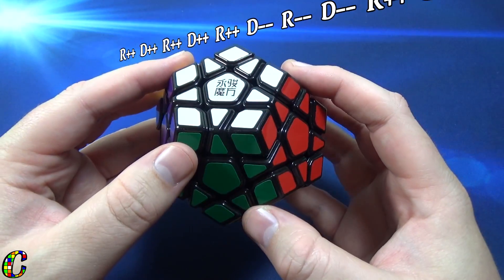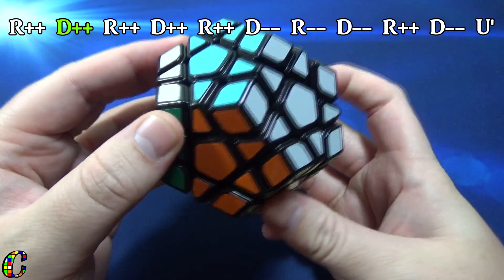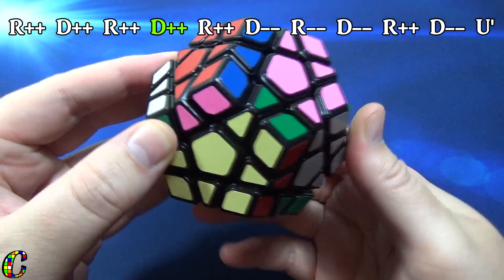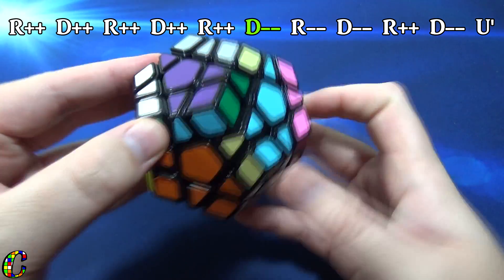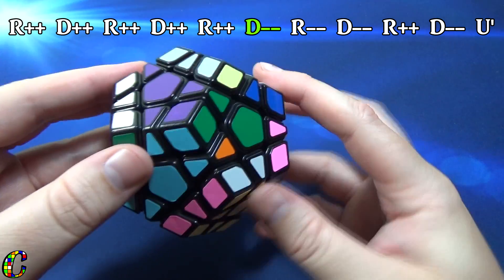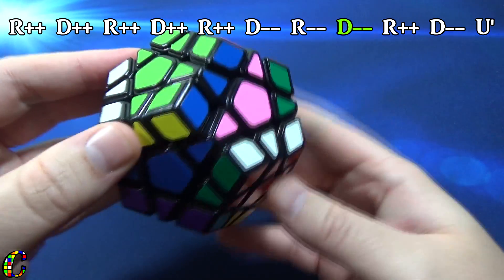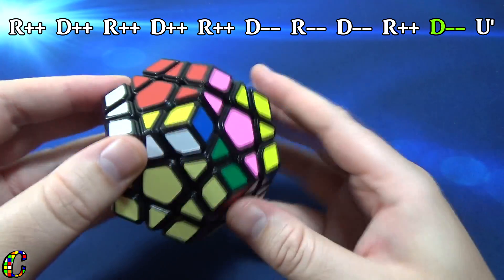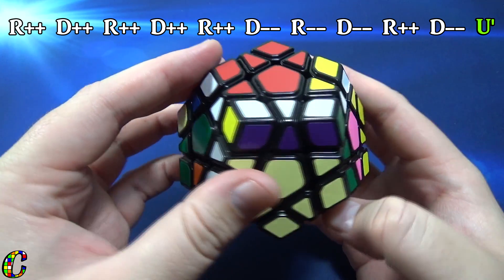Here it starts off with R++, D++, R++, D++, R++, D--, which means counterclockwise, R--, counterclockwise, and then you continue just like that. And then the last move is a U prime and that finishes off that part of the scramble.